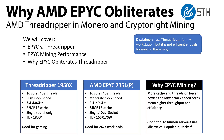The AMD EPYC 7351 is a 16-core, 32-thread example. There's a P part which is the single socket part. It has a more moderate clock speed designed for server workloads, between 2.4 and 2.9 gigahertz, but the key here is that it has 64 megabytes of level 3 cache. It does have dual socket capable parts and the TDP is somewhere between 155 and 170 watts.